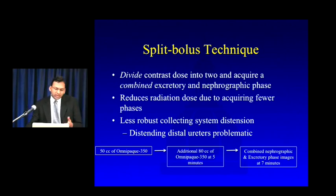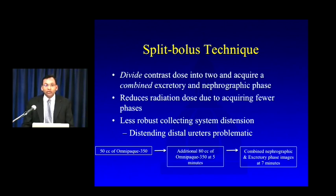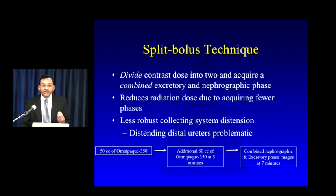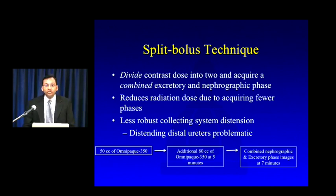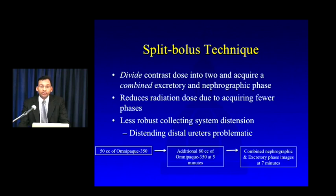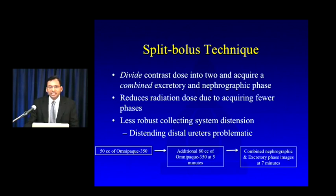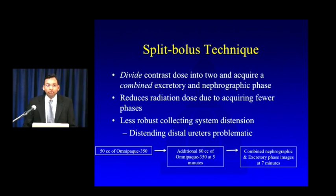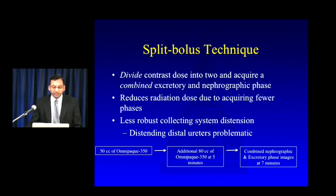The split bolus technique entails dividing your contrast dose into two and acquiring a combined excretory and nephrographic phase. You initially administer 50 cc's, wait about five minutes, then administer another 80 cc's, and at seven minutes acquire combined nephrographic and excretory phase images. Because you are combining two phases, you reduce radiation dose. However, only that initially administered 50 cc's contributes towards excretion, so you end up with less robust collecting system distension, particularly a problem in the distal ureters.